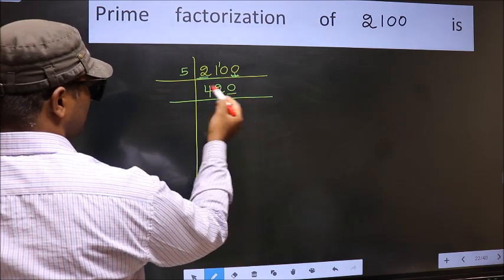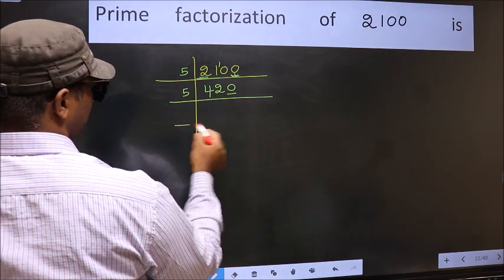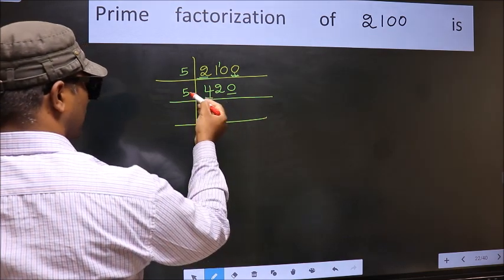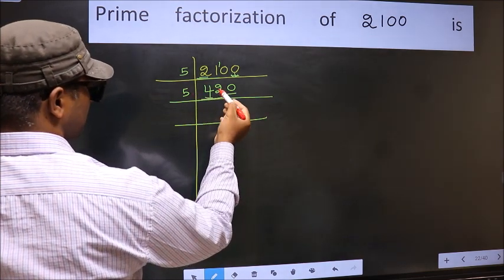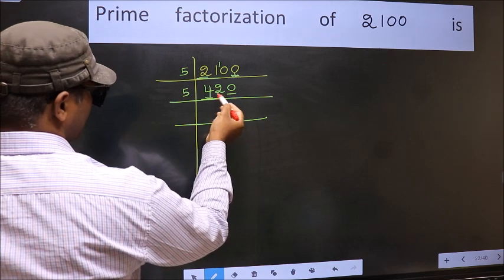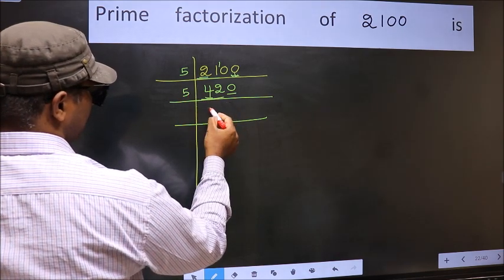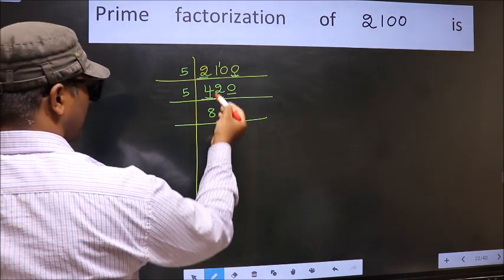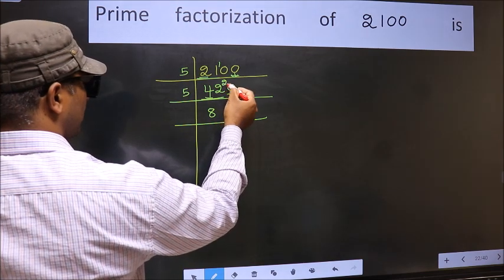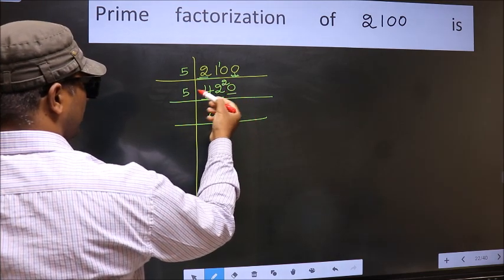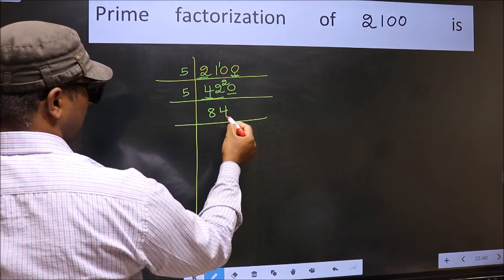Now last digit 0, so take 5. First number 4, smaller than 5, so take 2 numbers: 42. A number close to 42 in 5 table is 5×8=40. 42 minus 40 is 2, carried forward 20. When do we get 20 in 5 table? 5×4=20.